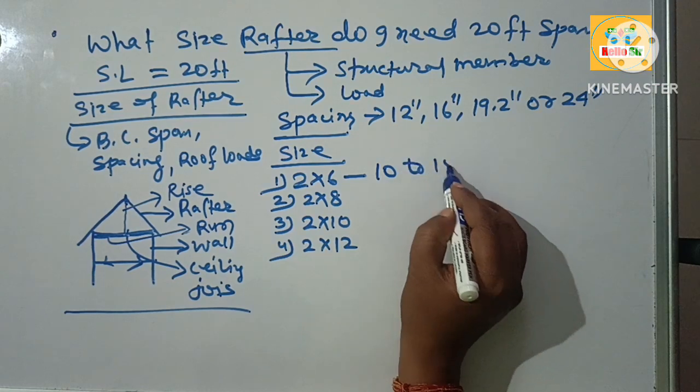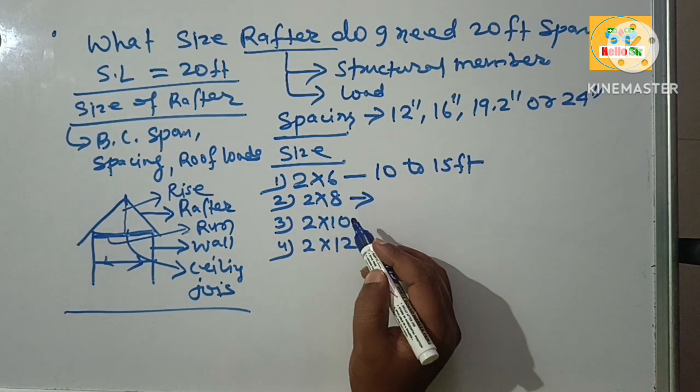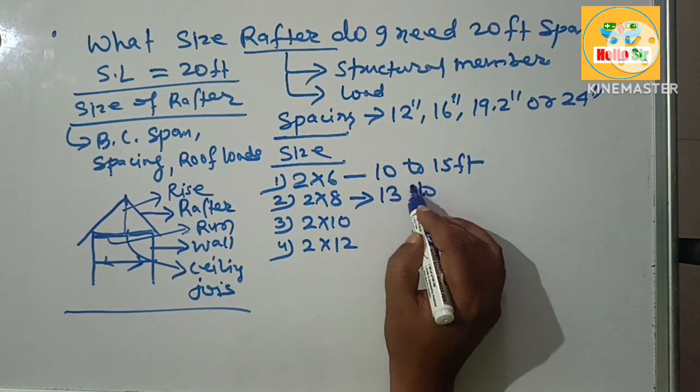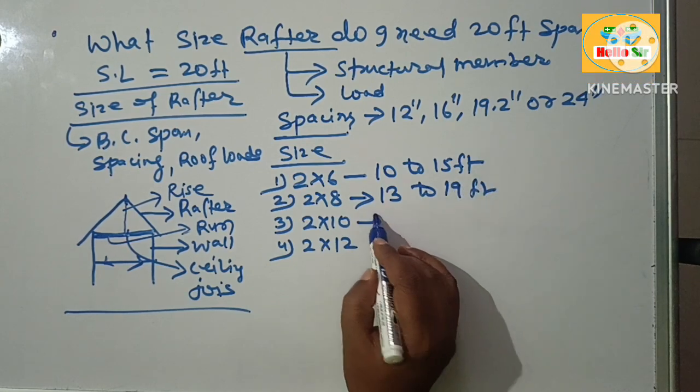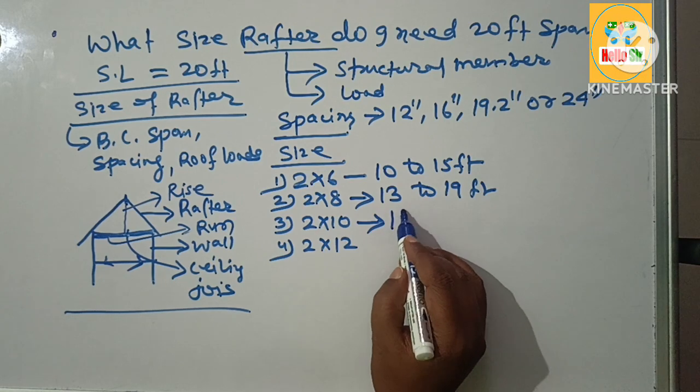In general condition, a 2 by 8 rafter may span from 13 to 19 feet span length. And in general, a 2 by 10 rafter may span from 16 to 23 foot span.